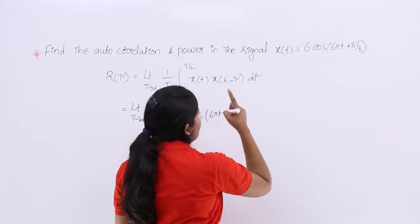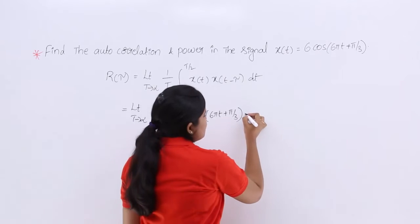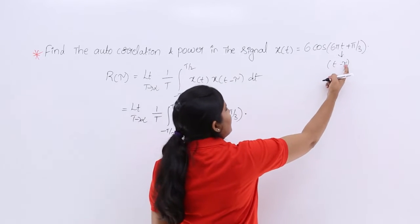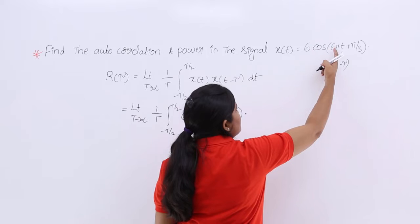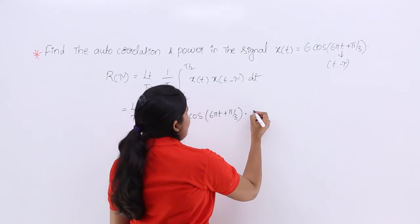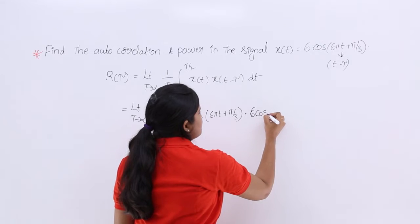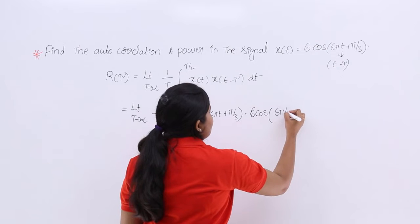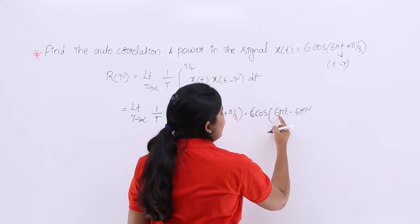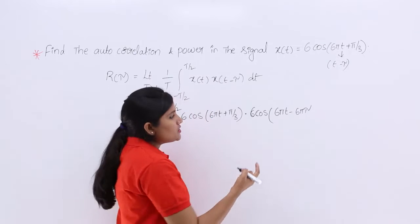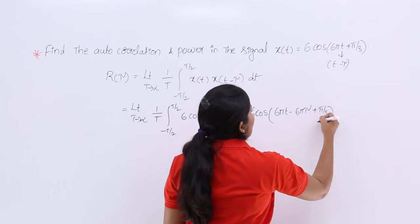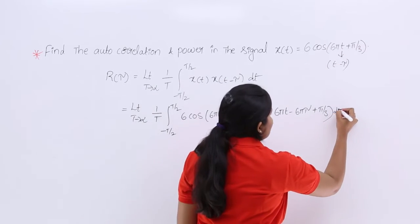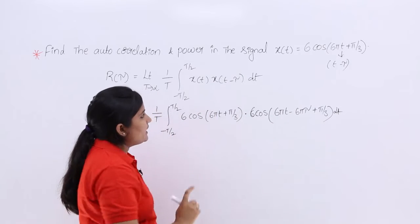For x(t−τ), in place of t substitute t−τ. So x(t−τ) becomes 6cos(6π(t−τ) + π/3), which expands to 6cos(6πt − 6πτ + π/3). I have now substituted both x(t) and x(t−τ) into the formula.